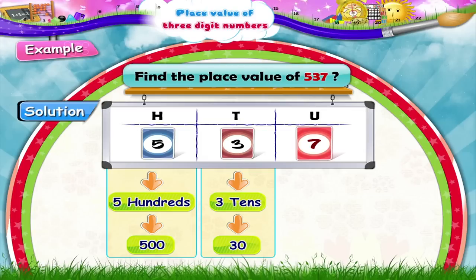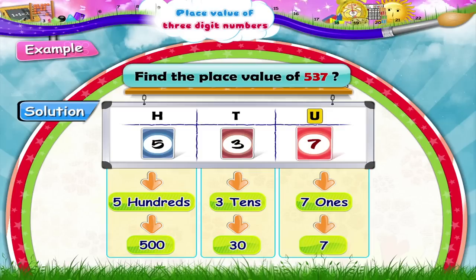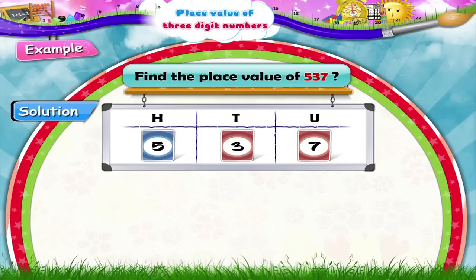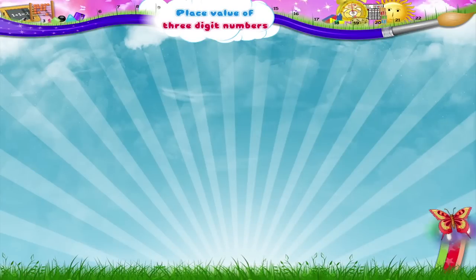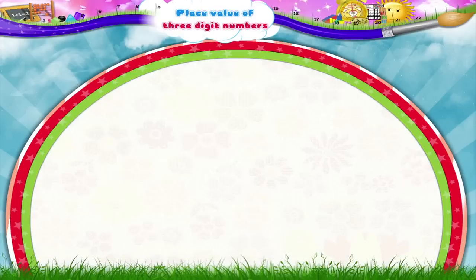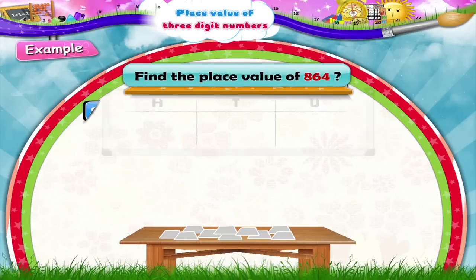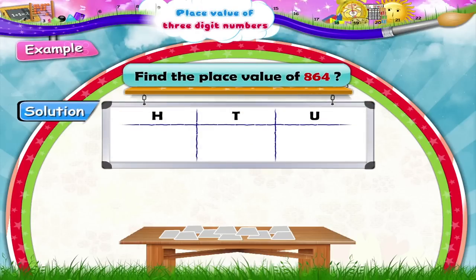And finally, seven is the units, or ones, place digit. So its place value is seven ones, or seven. Wasn't that interesting? Okay, then let us learn the place values of some more three-digit numbers.